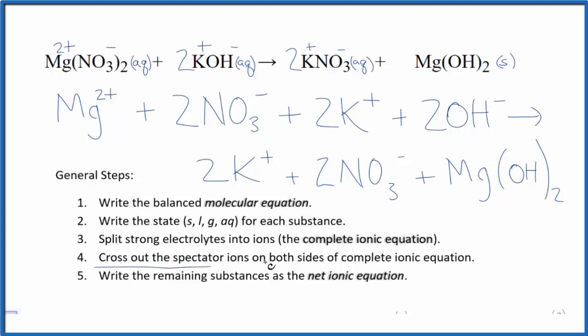Now we can cross out spectator ions—they're on both sides. Let's see what we have. I see two nitrates in the reactants and two nitrates in the products. Get rid of those.